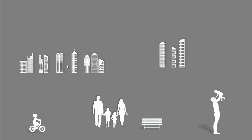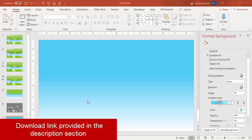To make this slide we need these images — some building images created in Adobe Illustrator, a girl riding a bicycle, a family, a bench, and a father holding a baby. The rest of the elements we can create in PowerPoint. So let's see how to make the slide — add a new slide and change the background to gradient fill.